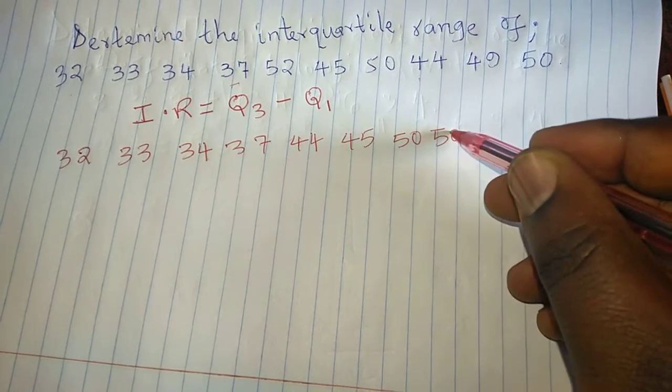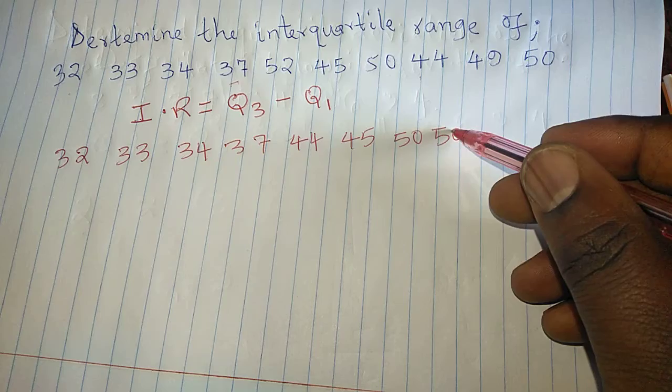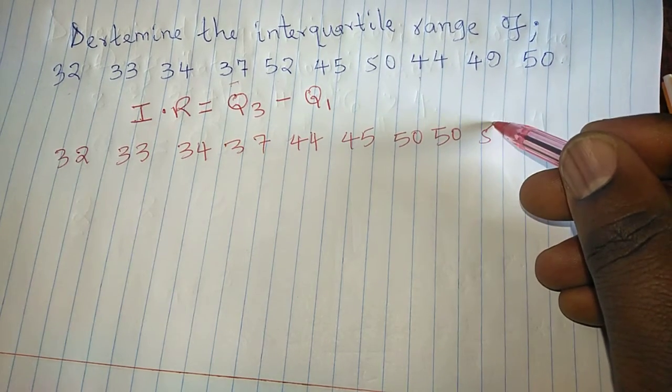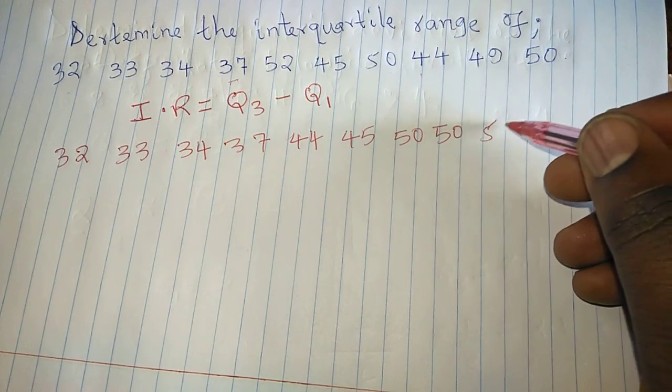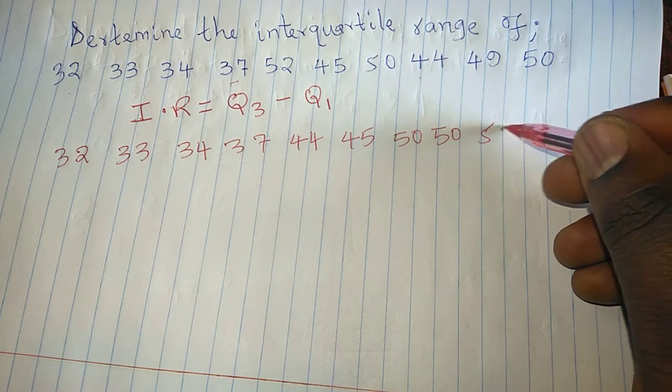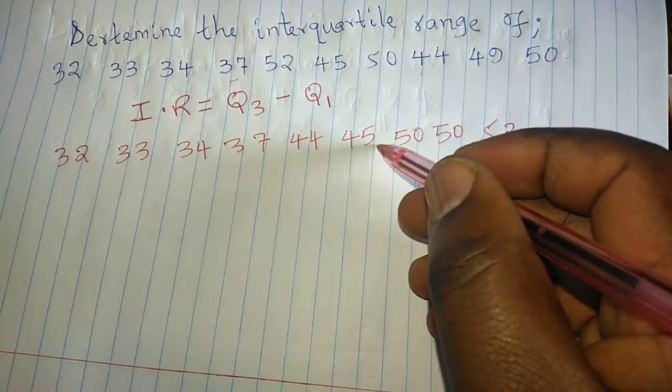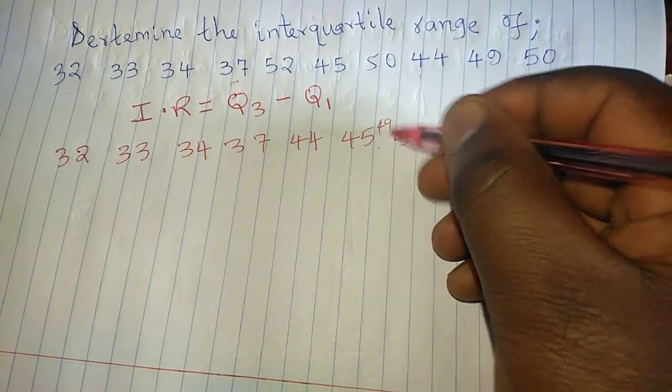Then another 50. Then from 50 and 50, we can have 52. But here we have 49, sorry. So we have 49.